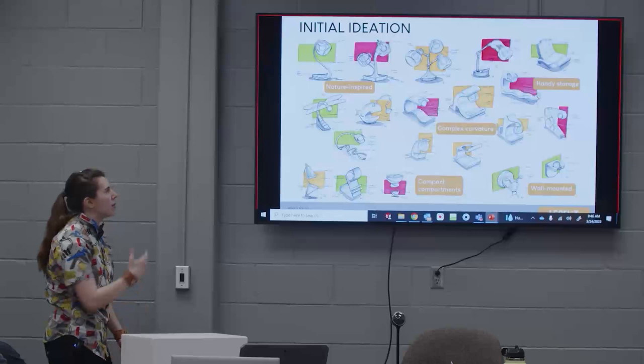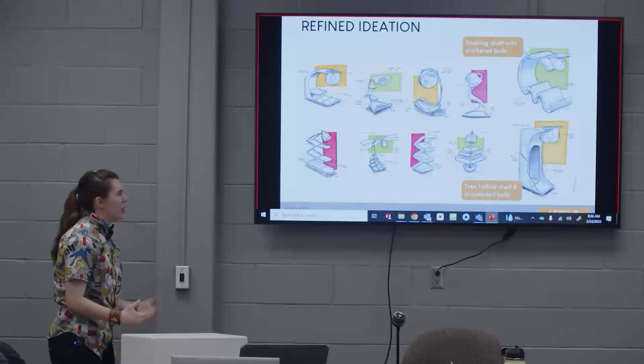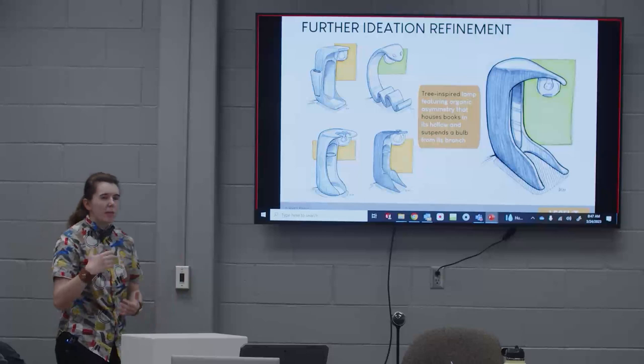Knowing that it was apple-inspired with apple juice, a lot of my forms were very nature-inspired. But I also wanted to think about some complex curvature, adding some unique flair to this form, but also maybe some handy storage, pun intended. My forms really started to harken back to that tree-like form. How could I incorporate kind of a hanging apple from that tree in a way that would be not only utilitarian, but fun?